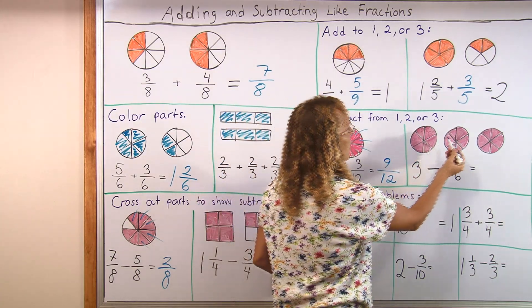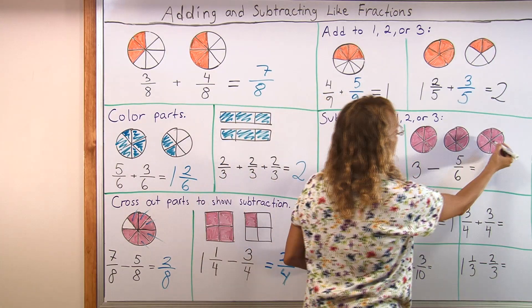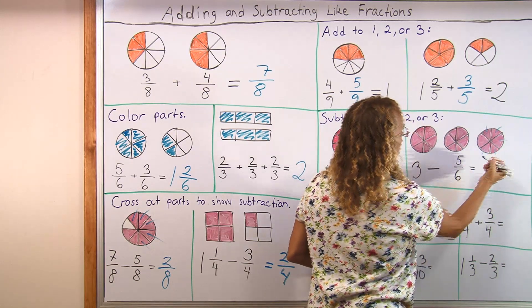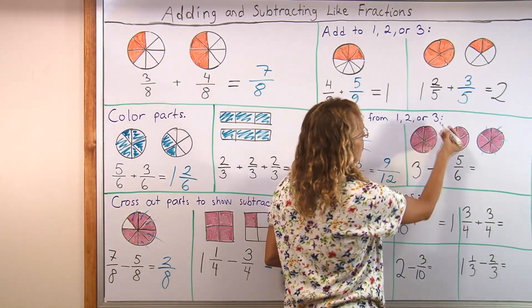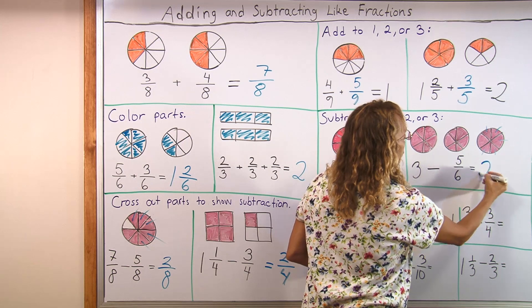Or 3 and then take away 5 sixths. Again, you can take those 5 slices away and what is left is 2 whole pies and 1 sixth.